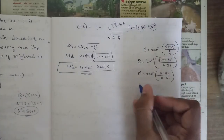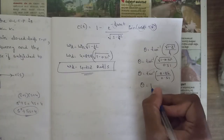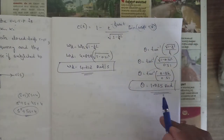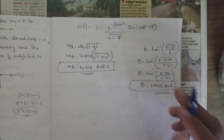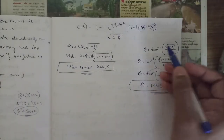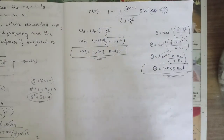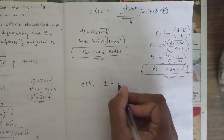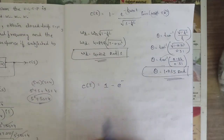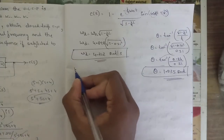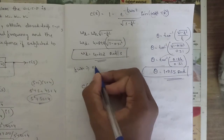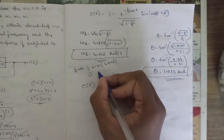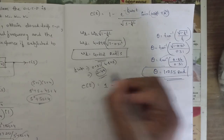√(1 − 0.51²) = 0.86, divided by 0.51. Setting the calculator in radian mode gives θ = 1.035 radians. Now computing ζ × ωn: 0.51 × 4.898 = 2.49.